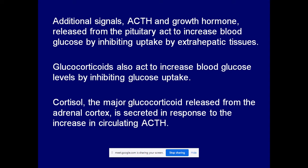Additional signals stimulate the production of ACTH and growth hormone, released from the pituitary gland. They act to increase blood glucose by inhibiting glucose uptake by extra-hepatic tissues — signaling those tissues not to use much glucose, so glucose is retained in the blood. Glucocorticoids also act to increase blood glucose levels; cortisol, for example, increases blood glucose by inhibiting glucose uptake.